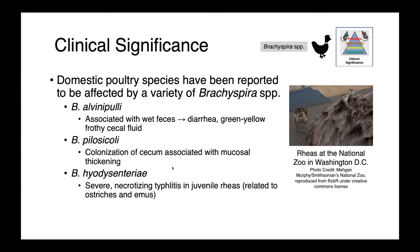In birds, we can see infections caused by a variety of Brachyspira species. Brachyspira alvinopulli is associated with wet feces to diarrhea and green-yellow frothy cecal fluid. Brachyspira pelosicoli colonizes the cecum and is associated with mucosal thickening and poor feed conversion. Brachyspira hyodysenteriae has also been reported to cause severe necrotizing typhlitis — inflammation of the cecum — in juvenile rheas, which are birds related to ostriches and emus.